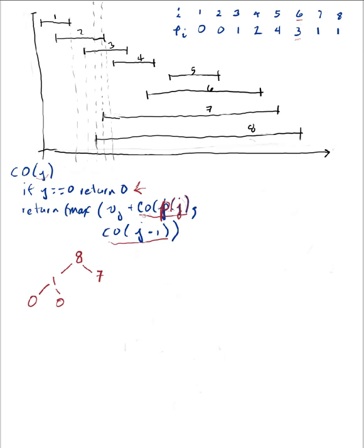So for 7, I'll need to compute optimal for P of 7, which is 1, and then for the set that does not include 7, that's 6. 1 again will make a call to compute optimal for 0 twice, once here because P of 1 is 0, and once here because 1 minus 1 is 0.